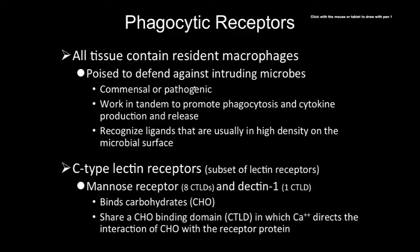Macrophages are poised to defend against both commensal and pathogenic microbes. Misconception: just because you have healthy bacteria on your skin doesn't mean they wouldn't make you sick if they got into your bloodstream. A commensal organism out of its normal location can become pathogenic. Macrophages work to promote phagocytosis and cytokine production, recognizing ligands usually present in high density on microbial surfaces — these are pathogen-associated molecular patterns.